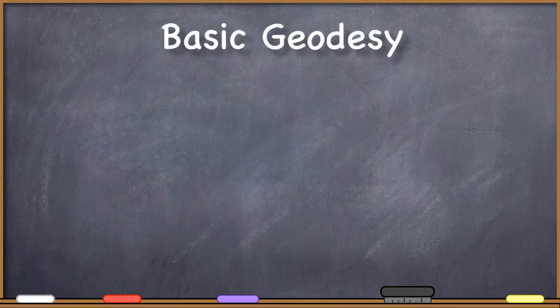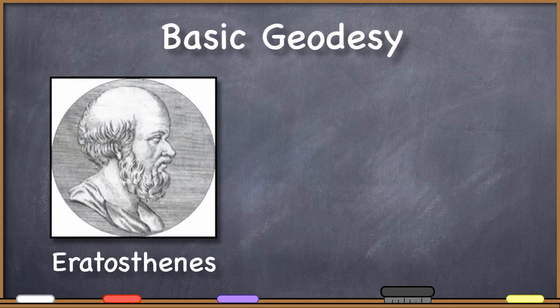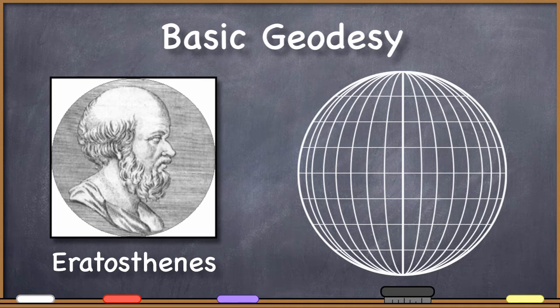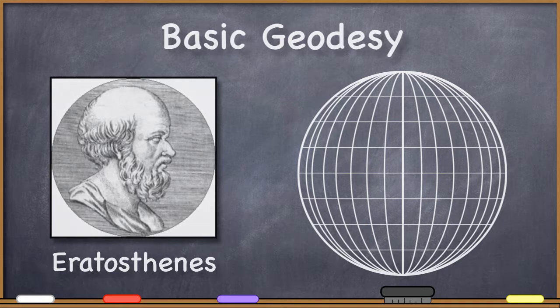Greetings, everyone. Welcome back to our study of basic geodesy. In this video, we're going to learn how Eratosthenes was able to calculate the shape and the size of the earth from some very simple observations that he made while he was working at the Library of Alexandria.